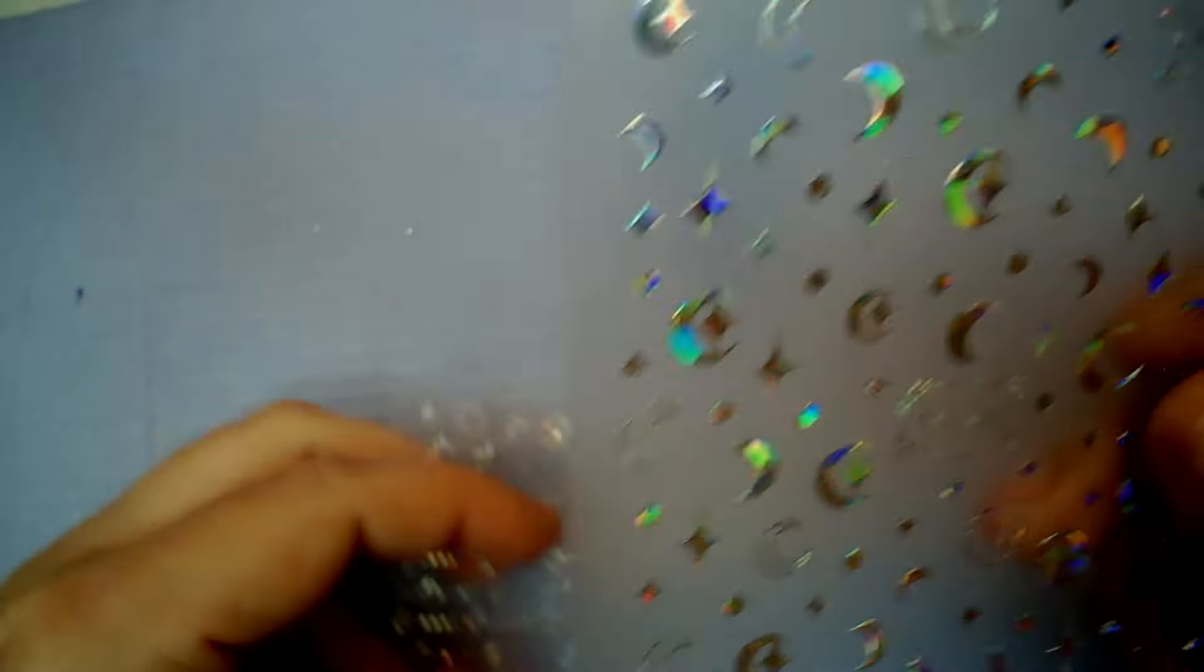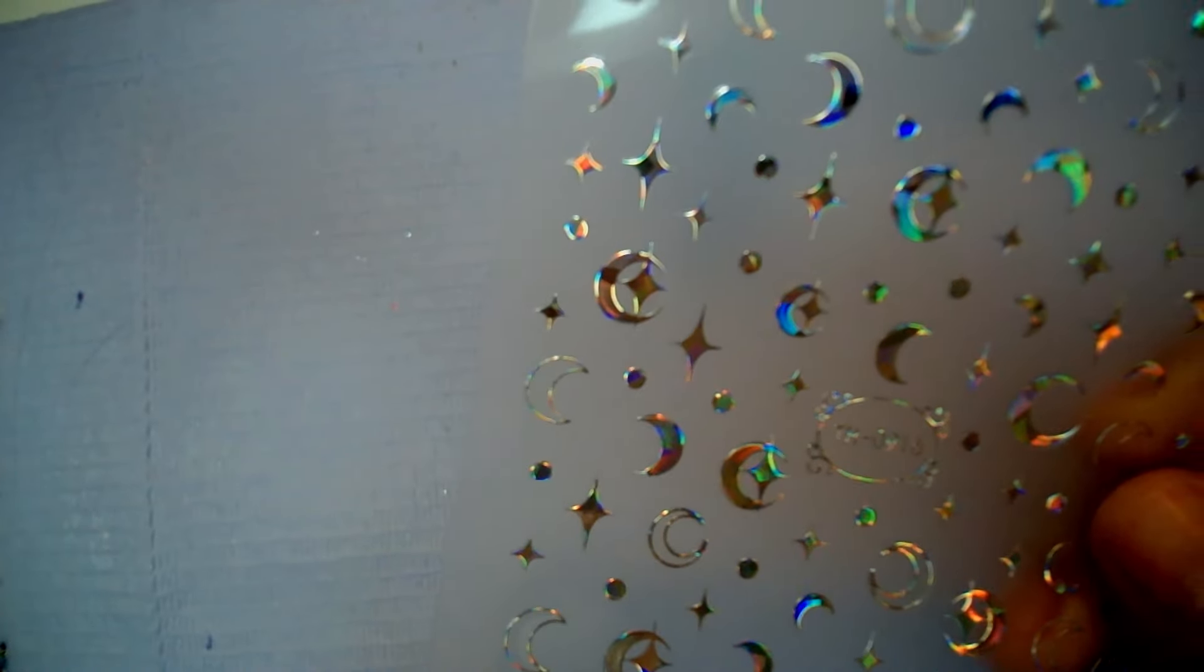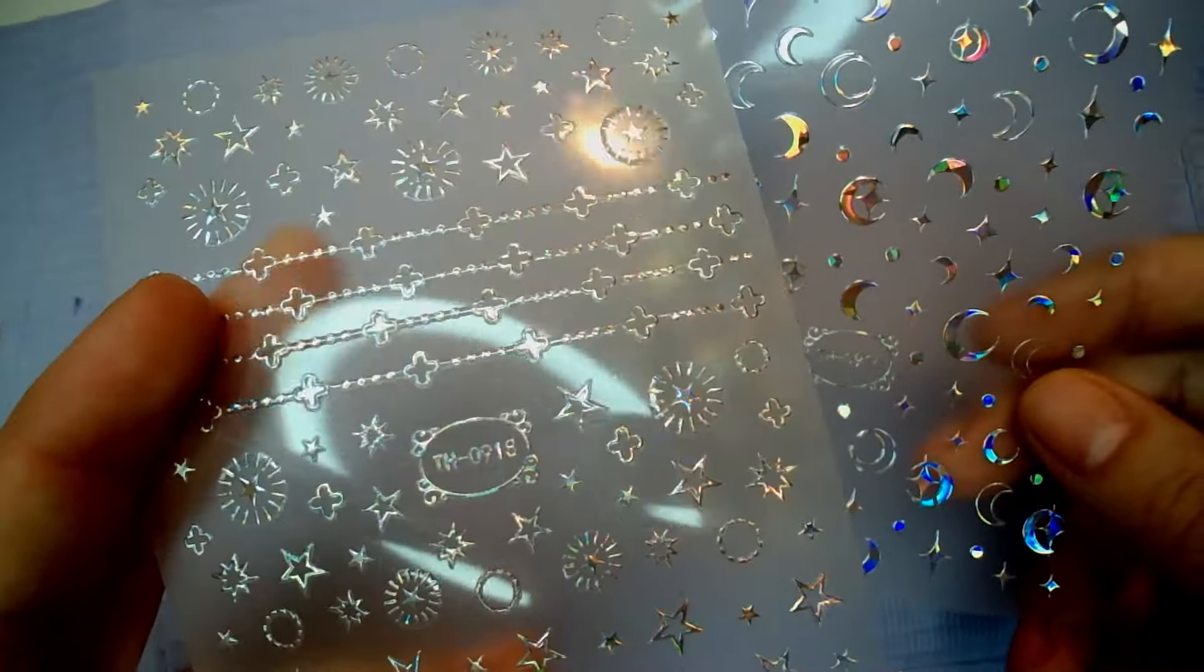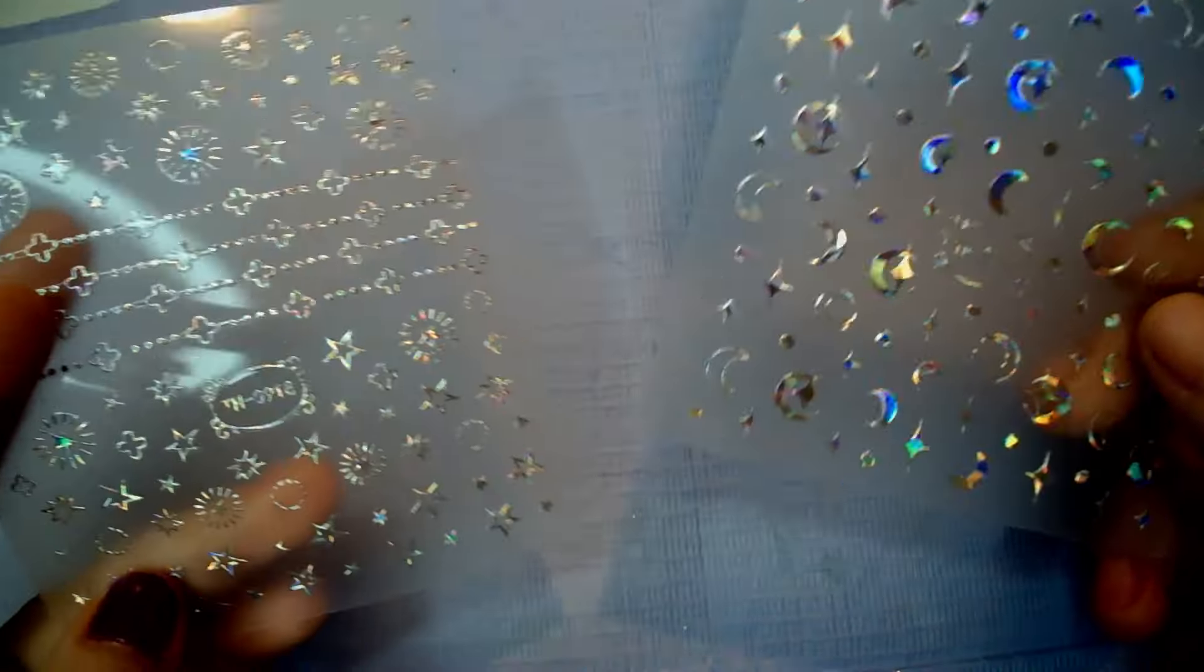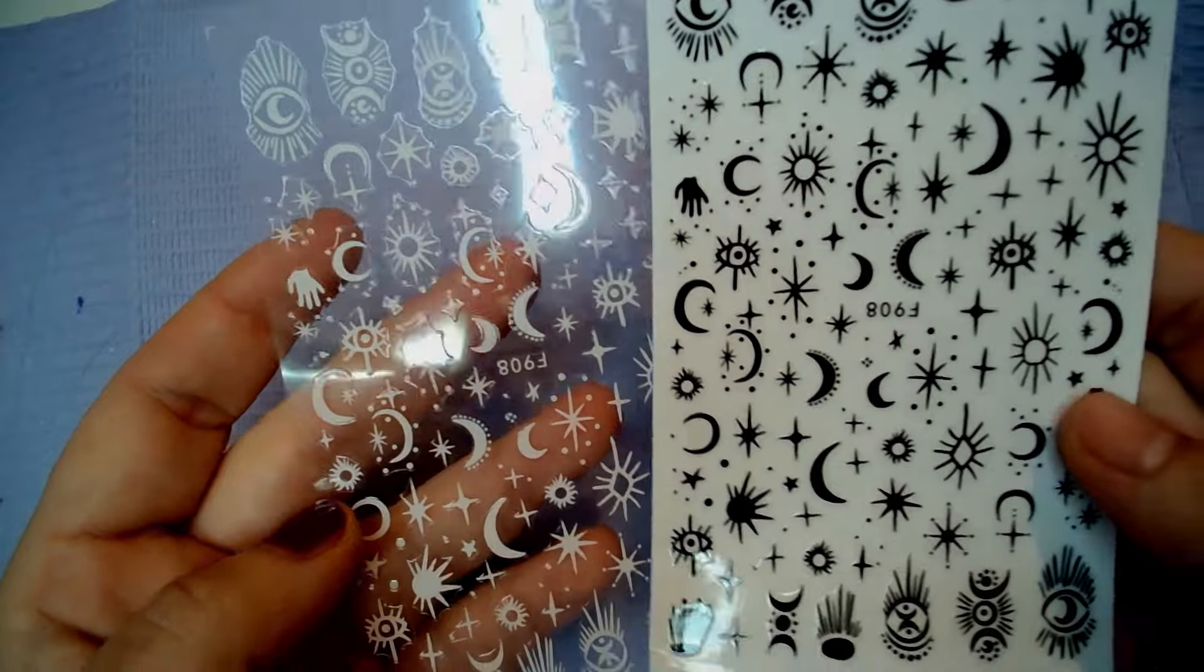So, the first lot of stickers are these hollow ones here. Super, super pretty. Then the next lot of stickers. I got four of these. They're exactly the same. But they're in white and black.